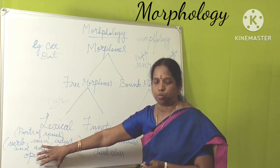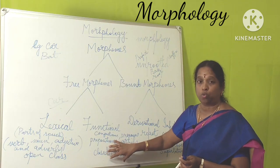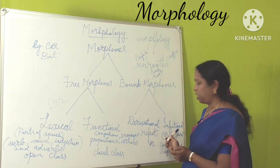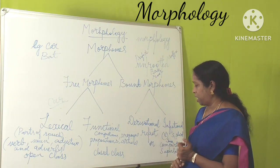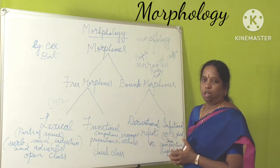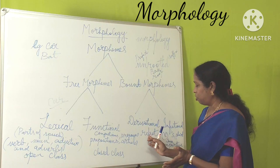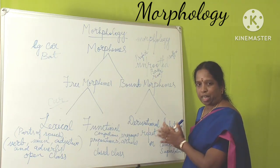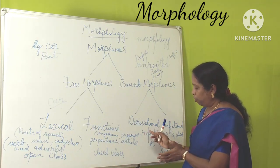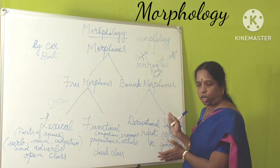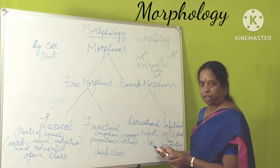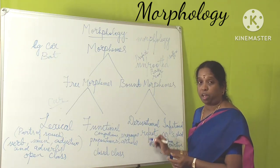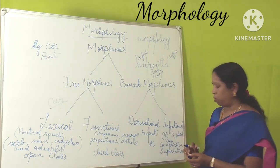Functional morphemes cannot give content meaning; they only carry grammatical meaning. Lexical morphemes are an open class where you can add any number of words that give meaning, whereas functional morphemes are a closed class dealing only with the grammatical part. Coming to bound morphemes, there are two categories: derivational and inflectional. Derivational morphemes are similar to lexical morphemes in giving meaning — for example, 'act' can stand alone, but adding 're' makes it 'react,' and further additions can make 'reactor.' You can generate many words by adding prefixes or suffixes.